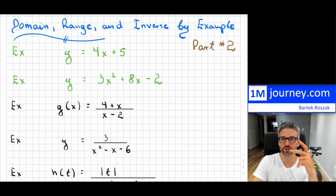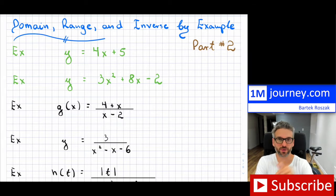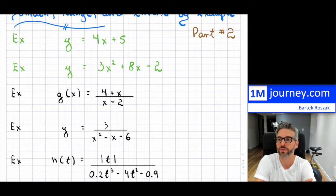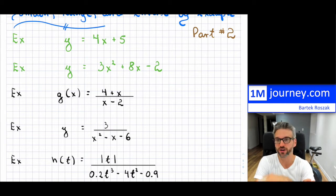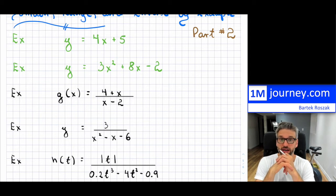Welcome back to part two of domain, range, and inverses by examples. This is a topic within grade 11. I'm going to put up a link to part one above — you should watch that first, as it introduces several examples. Here, we're going to work through quite a few examples, some of them really ugly. Our goal is to figure out the domain, the range, and then the inverse of each relation or function if it exists.